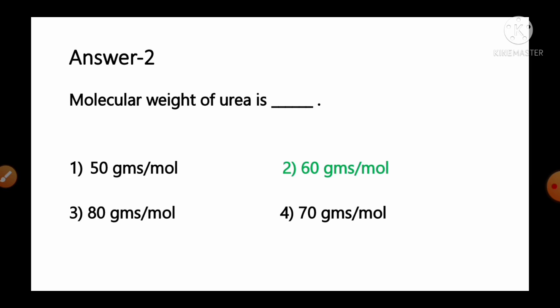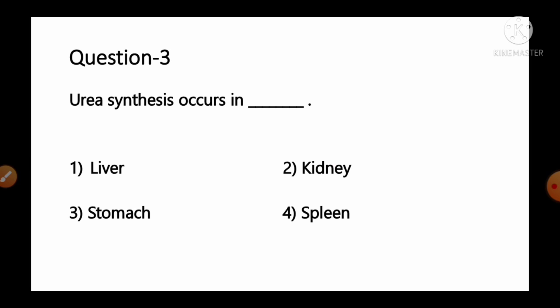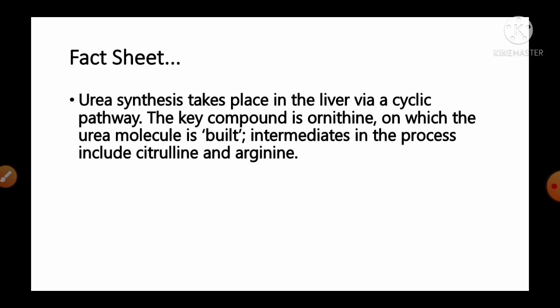Question number 3: Urea synthesis occurs in — options: 1) liver, 2) kidney, 3) stomach, 4) spleen. Urea synthesis takes place in the liver via a cyclic pathway. The key component is ornithine on which the urea molecule is built, and intermediates include citrulline and arginine. So option number 1, liver, is the correct answer.